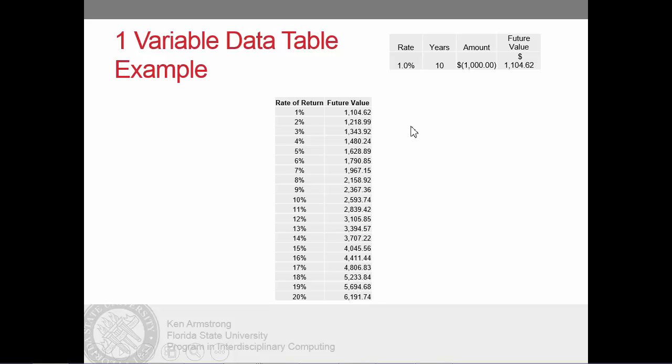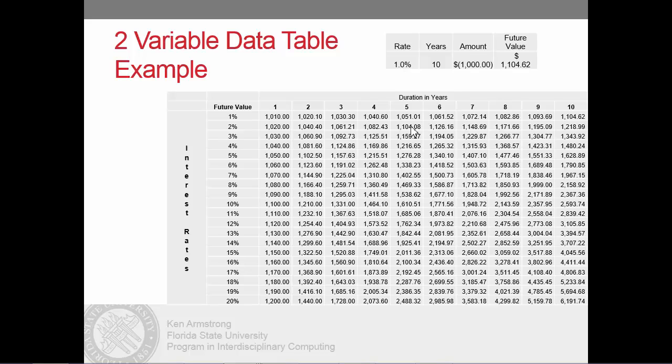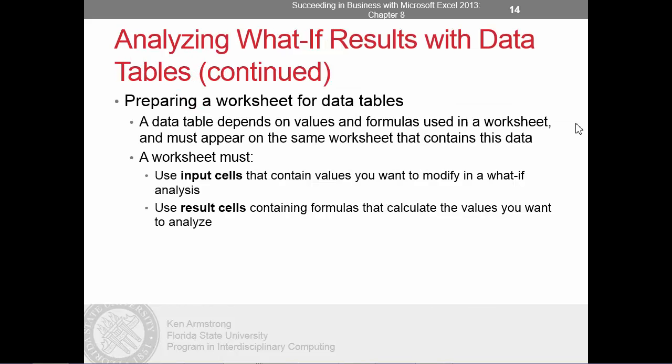In contrast, a two-variable data table has the ability to analyze the output of a result cell formula for changes in two variables. Building on our previous example, what if in addition to seeing results for changes in interest rates, we also wanted to see how it varies for changes in the length of the investment duration? It's important to know that a data table depends on values and formulas on the same worksheet. You must structure the worksheet to contain input cells with values you want to modify and result cells that calculate values from those assumption cells. In the next video, we'll review a one-variable data table illustrating how revenue, expenses, and profit vary as units sold vary from 500 to 5,000.